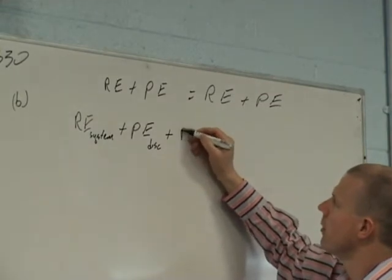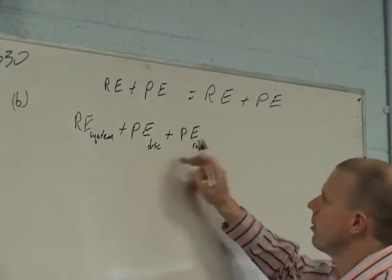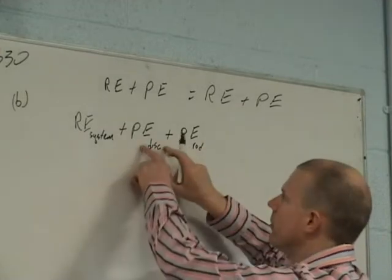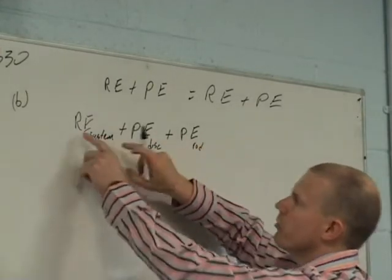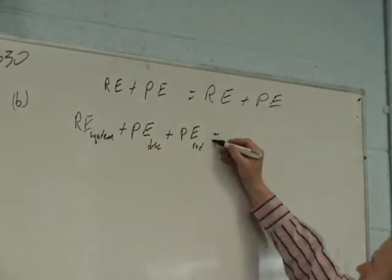Plus potential energy of the disk, plus... We've got to break the potential energy up because they're going to have different heights. The disk is going to have a different height than the rod. Whereas it's all going to have the same rotational energy.